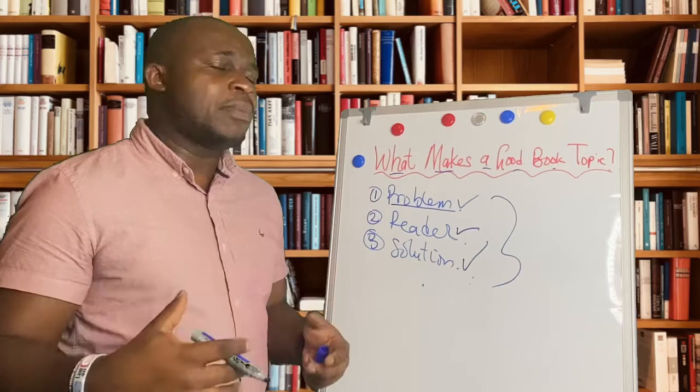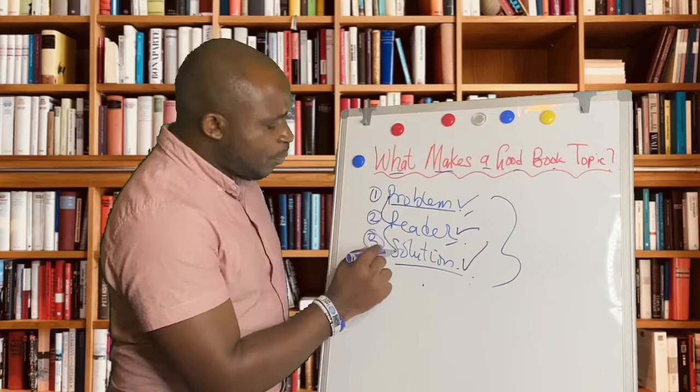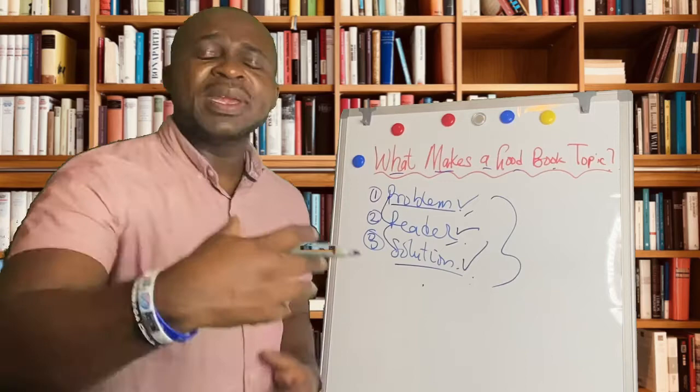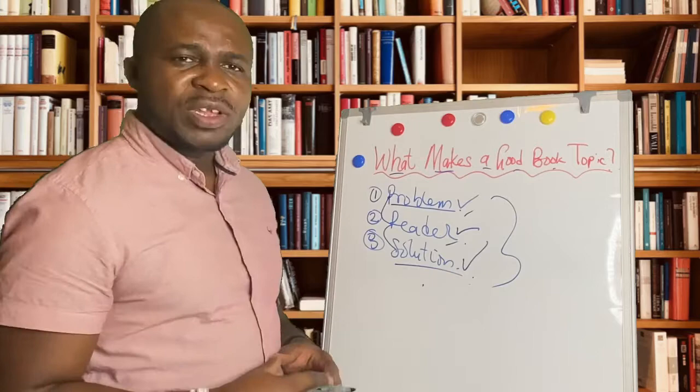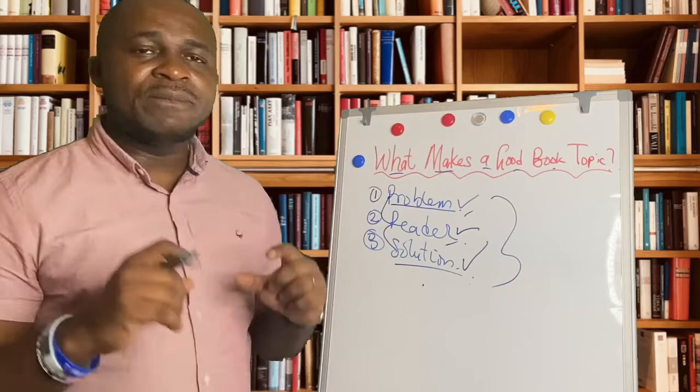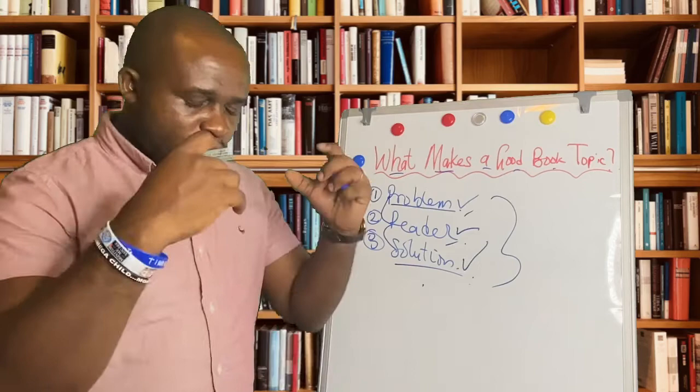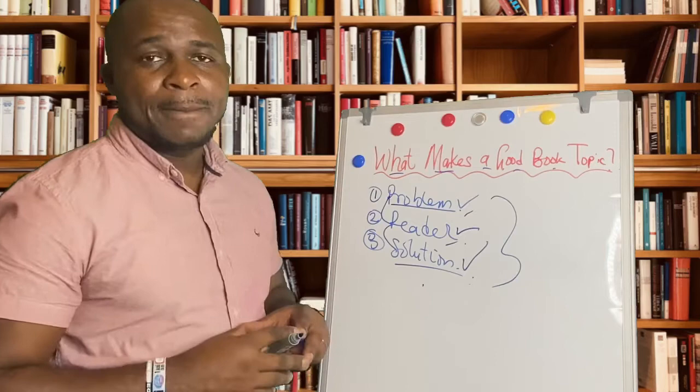So we see book topic goes beyond just 'I'm writing about this.' It helps you to think about the problem you're solving, the who is reading, and the solution you're offering. And when you have, most importantly, the problem, the solution, and the reader in place, you realize that you are not just communicating for communicating sake. You're helping people solve a problem. And that is one of the reasons they are going to pay you some very good money in order for you to help them. And that is one of the reasons they are going to consider you as an expert. Your book, writing a book is a very powerful tool, but this only happens when you know exactly what you're communicating, to who you're communicating, and what solution you're bringing. When you know this, you know your value as an author and then you're on your way to write a best-selling book.